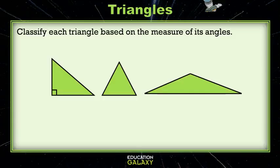Let's classify each of these triangles based on the measure of its angles. Okay, in the first triangle, I see a right angle. Remember, that little square means 90 degrees. So this must be a right triangle.